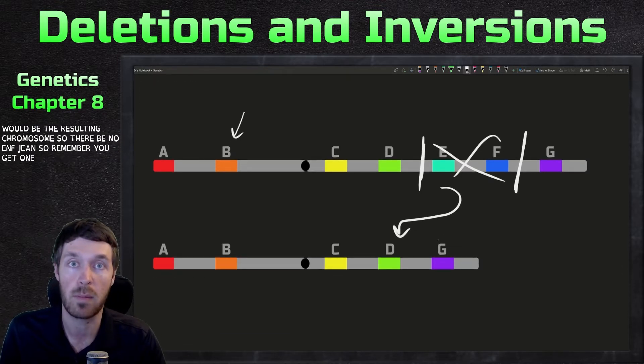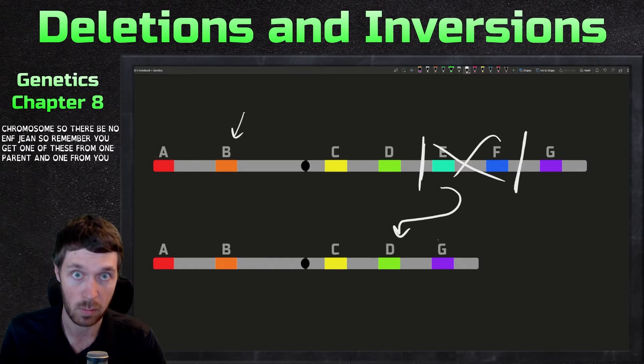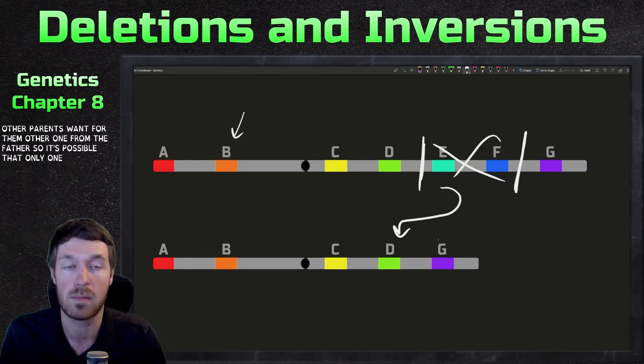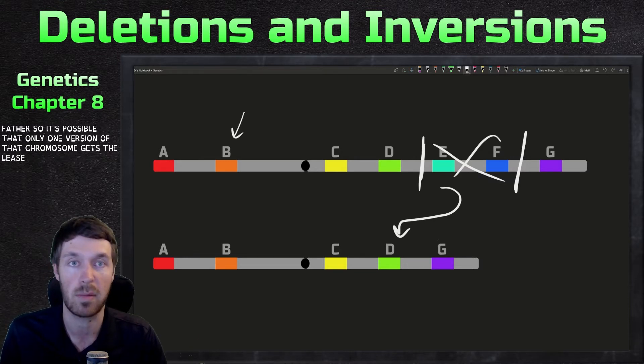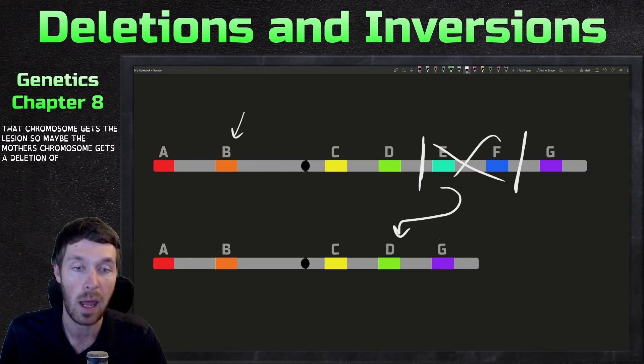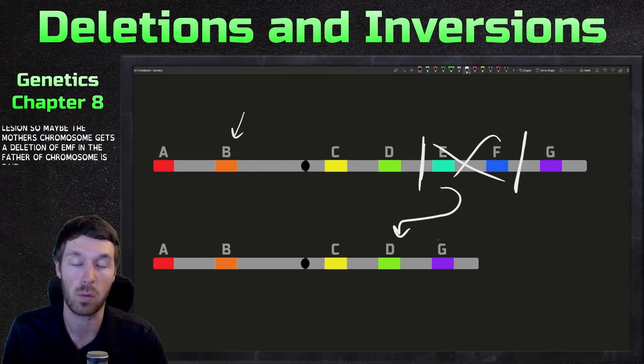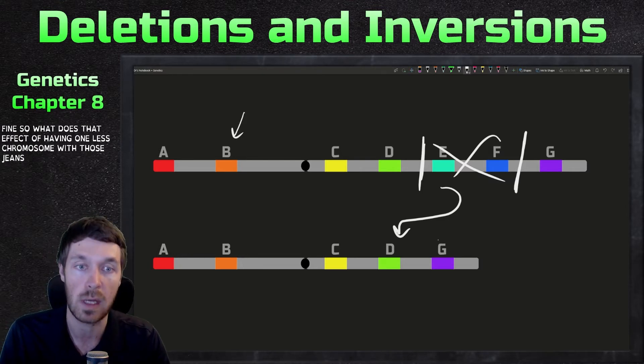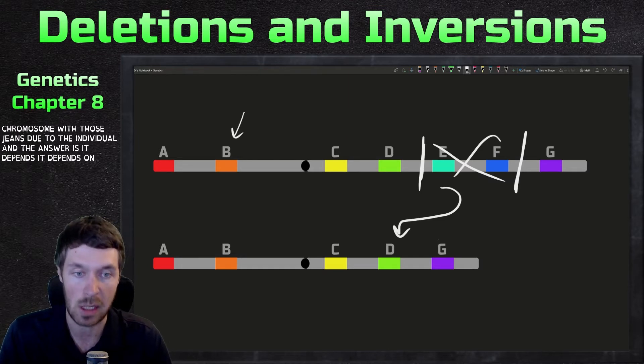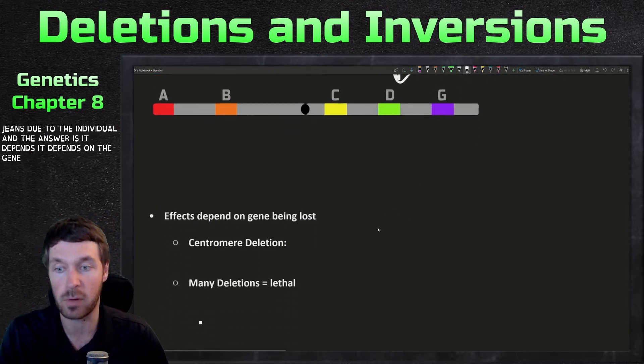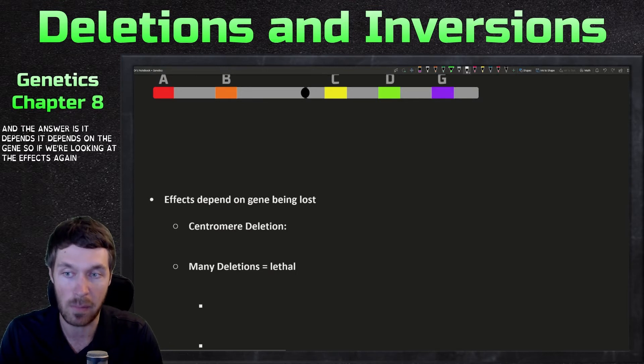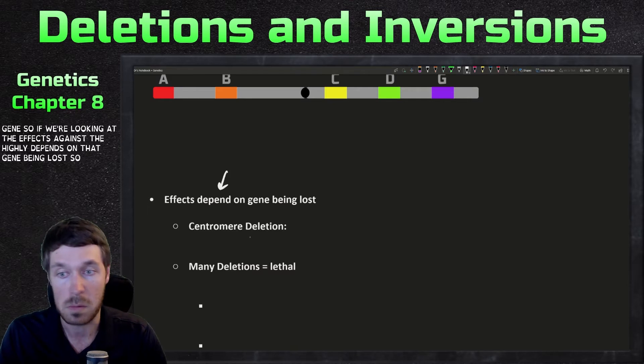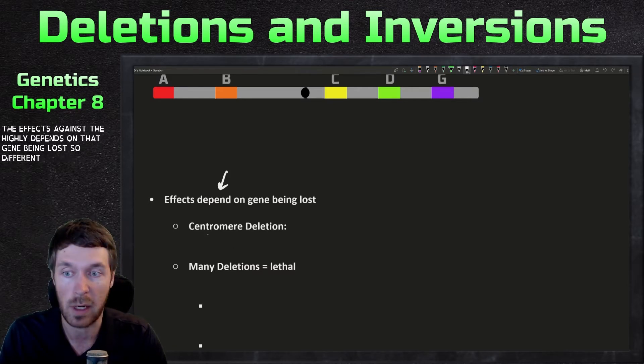So remember, you get one of these from one parent and one from the other parent. So one from the mother, one from the father. So it's possible that only one version of that chromosome gets deletion. So maybe the mother's chromosome gets a deletion of E and F and the father's chromosome is fine. So what does that effect of having one less chromosome with those genes do to the individual? And the answer is it depends. It depends on the gene.